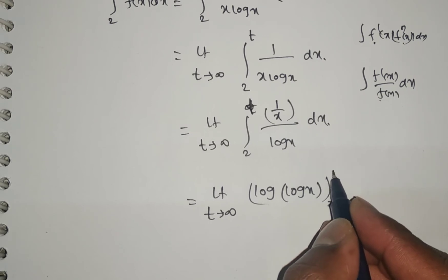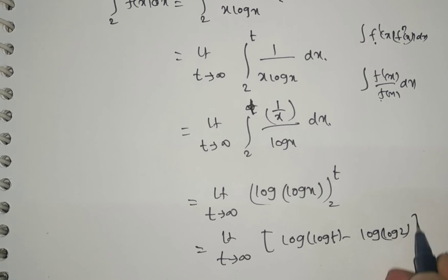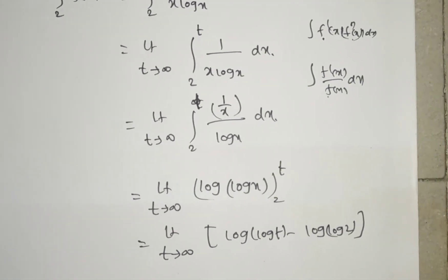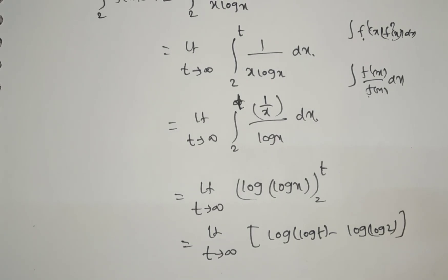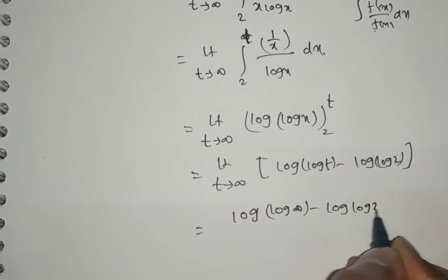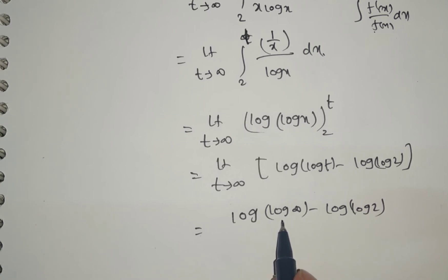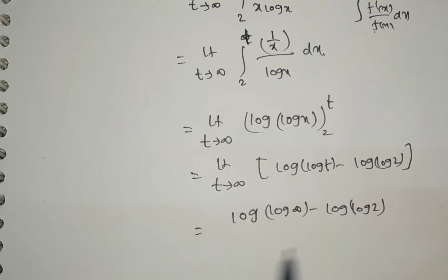Applying the limits from 2 to t, we get the limit as t tends to infinite of log of log t minus log of log 2. Now applying t tends to infinite: log of log infinite minus log of log 2. Log of log 2 is a small finite value. Log infinite is infinite, so log of log infinite is also infinite. Therefore, infinite minus a small finite value is infinite. So the limit is infinite.